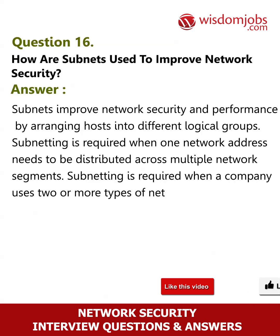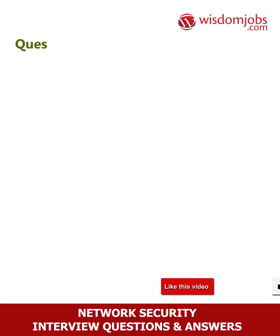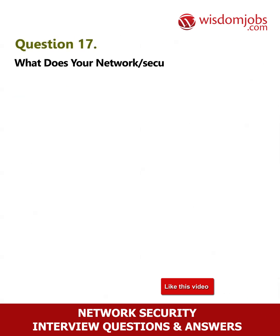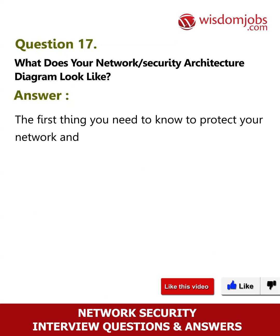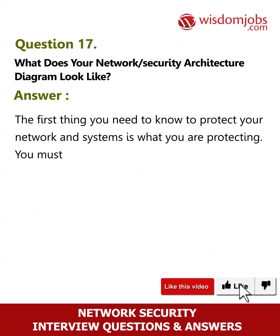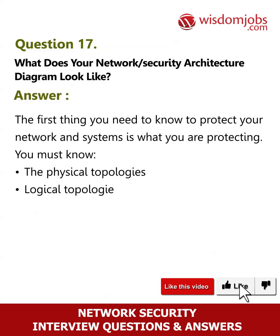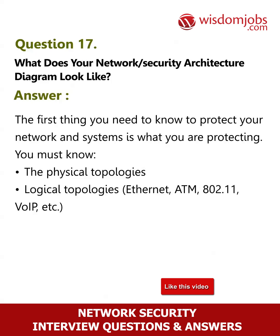Question 17: What does your network security architecture diagram look like? The first thing you need to know to protect your network and systems is what you are protecting. You must know the physical topologies, logical topologies, Ethernet, ATM, 802.11, VoIP, etc., types of operating systems, and perimeter protection measures.